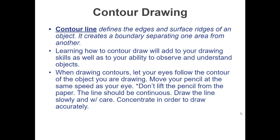Contour lines—a lot of you probably haven't heard of this before. A contour line is the edges of a surface ridge of an object, creating boundaries and separating one area from another. Think of coloring books—those are all made out of contour drawings. The now popular adult coloring books with lots of details are more detailed contour line drawings.